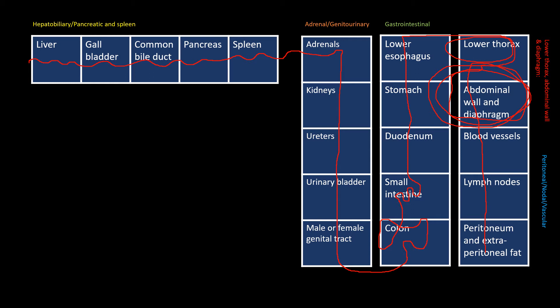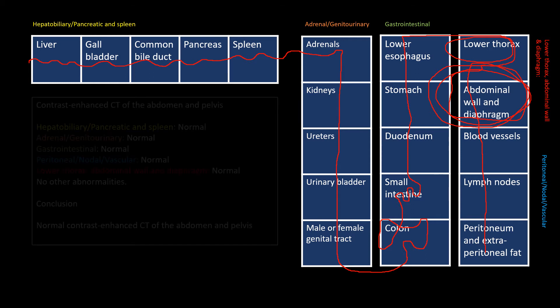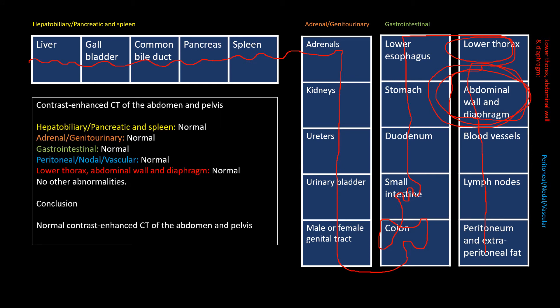It is quite important to have a report template that corresponds very well to your scheme of viewing the images — this works magic for both the viewing and reporting process. Here is a report template based on the scheme. When something is normal, just say the word 'normal,' because further description of normal organs would unnecessarily drain the energy of both the radiologist and the physician reading the report, and would mask and dilute the abnormalities. The report should be kept short — in a busy hospital or clinic, no one has time to read unnecessary statements.